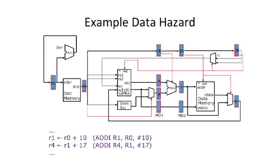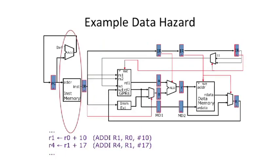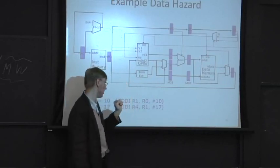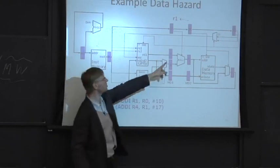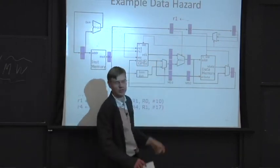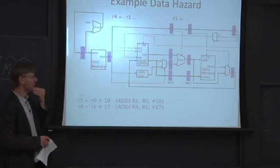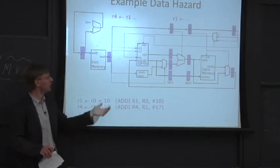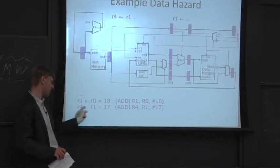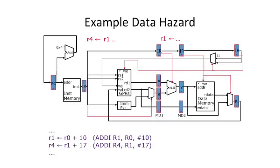What happens in this design? As instructions march down the pipeline, nothing bad has happened so far when the first add is in decode and the second add is behind it. But the question is: what do we fetch out of the register file for the second add? The result for R1 is available in the pipeline but hasn't made it back into the register file yet, so it will actually fetch the old, stale value. R1 is stale — we made a mistake.